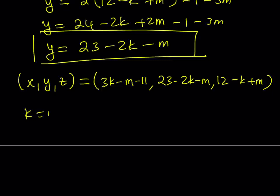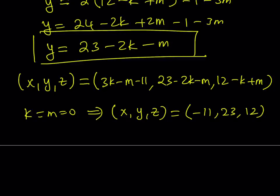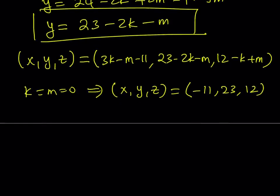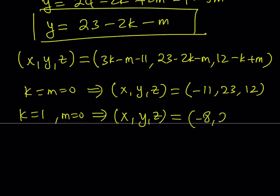But let's go ahead and look at some specific ones. For example, what if k and m are both 0? From here, we kind of get a simpler solution because it's easy to substitute. K and m basically forget about them. And you're going to get negative 11, and then you're going to get 23 and 12. So you can go ahead and plug these into the original equation. You're going to notice that they satisfy the original one. And let's take a look at another case. K equals 1, m equals 0. It's going to give you another ordered triple x, y, z. And that's going to look like negative 8, 21, and 11.